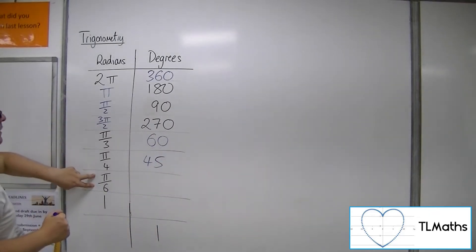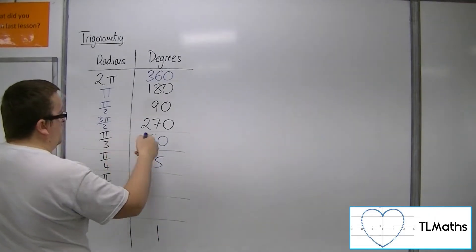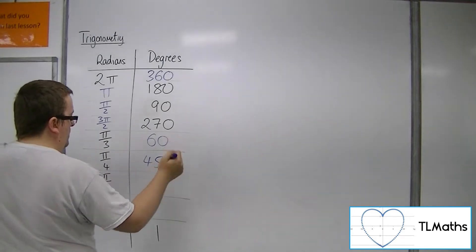So pi over 6, you could see that as pi over 3 divided by 2, so 30.